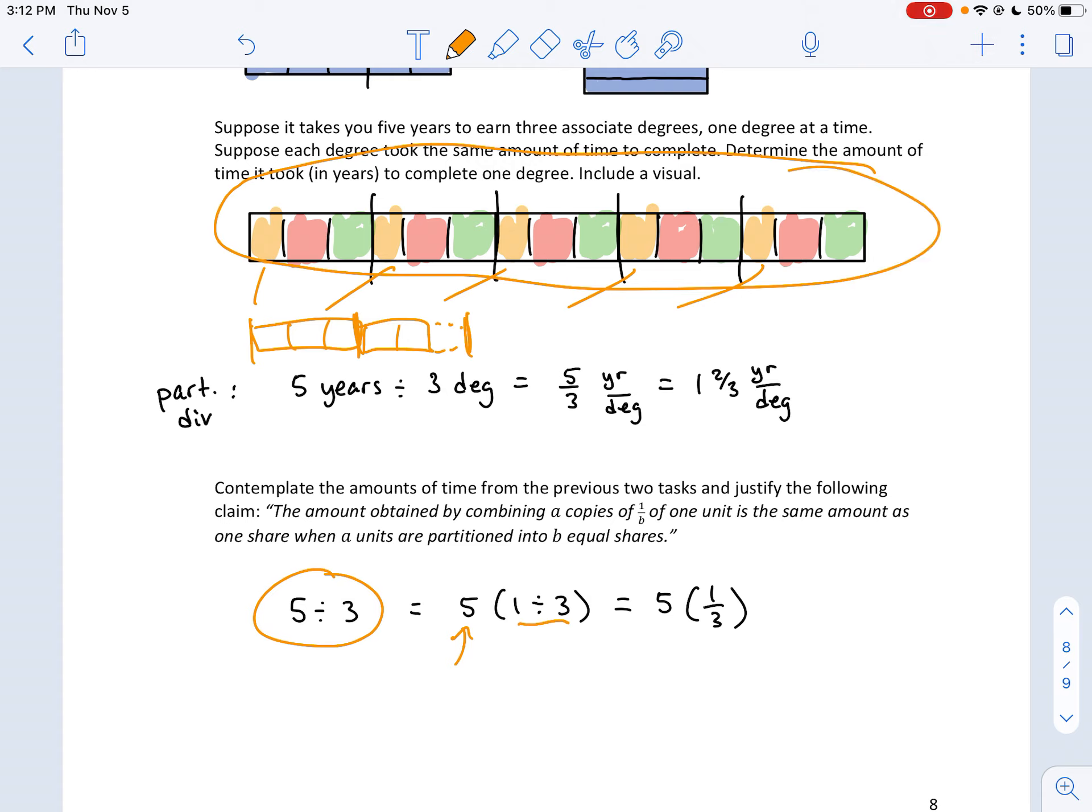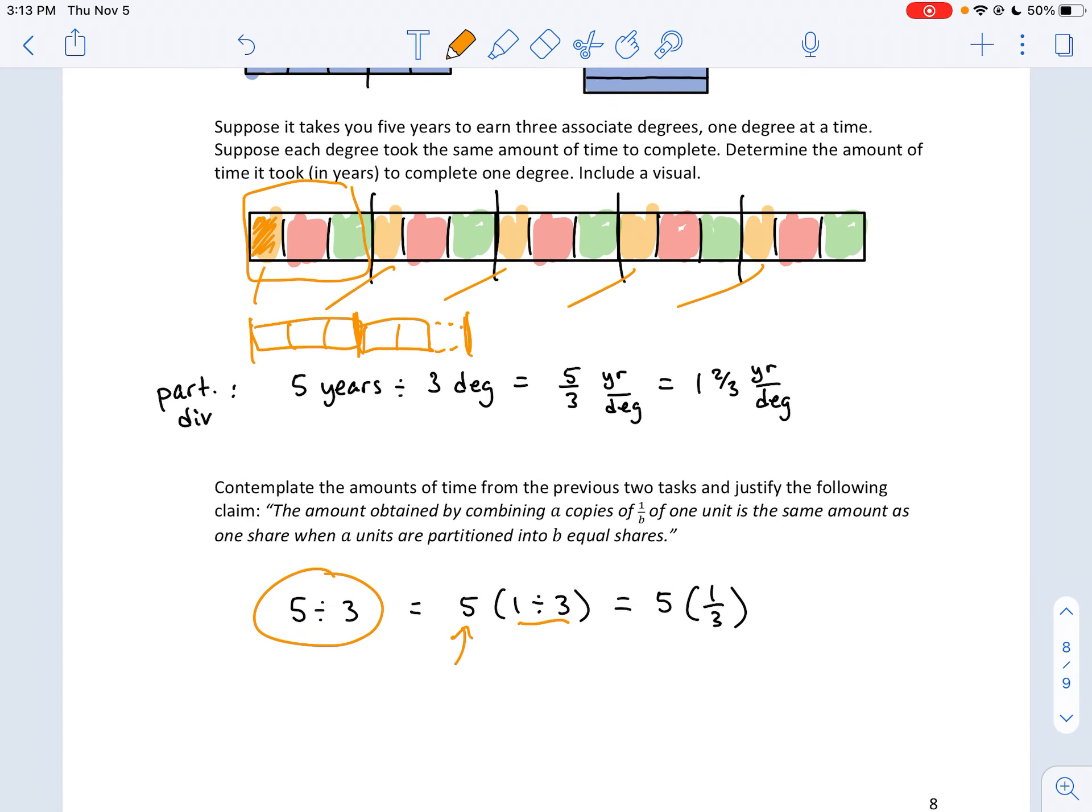So we were trying to split these five years into three equal groups, which corresponded to the three degrees. But instead, I'm going to do it by taking one year and splitting it into three groups and getting an amount, which is what I shaded here in orange, but then doing five of those to reconstruct how much time it takes for the first degree. And so when you say, okay, we'll just do five copies of one divided by three, one divided by three could be written as one-third, and you're doing five copies of one-third. So this helps, this way of thinking helps me realize that if I take five units and divide that into three groups, I get the same amount as if I do a third of a unit and then do five copies of that. There are two different ways to arrive at the same conclusion.